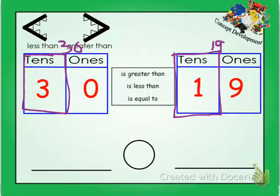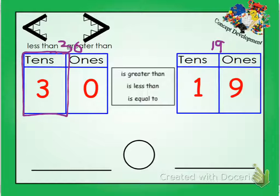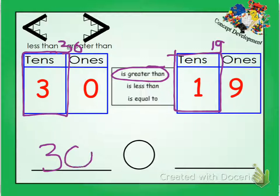So we know that 30, since it has 3 tens, is greater than 19. It only has 1 ten. Now we're going to have to write at the bottom. And we're going to write those numbers again. We're going to write 30, and we're going to write 19.